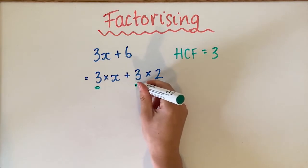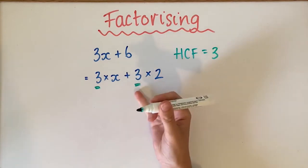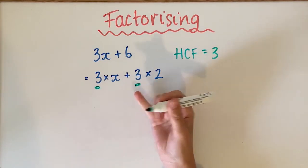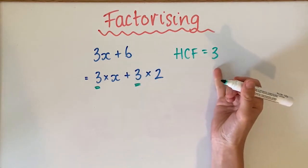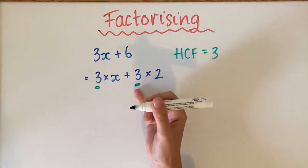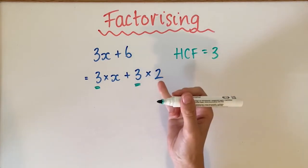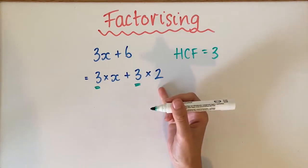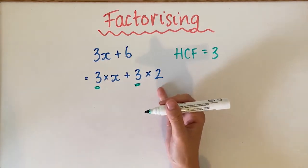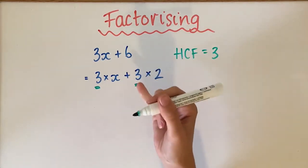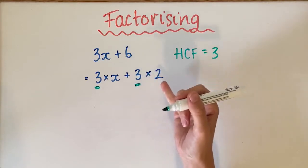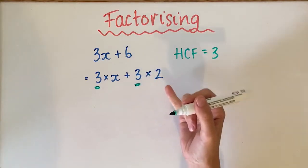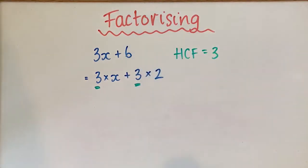For the second term, we start with the 3 because that's the highest common factor, and we go 3 times whatever will give us 6. So 3 times 2 gives us 6.